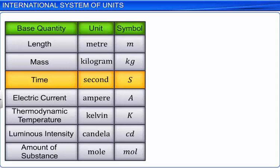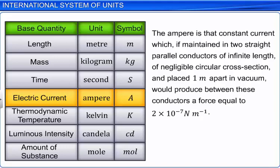Electric current is measured in ampere, denoted by the capital letter A. An ampere is that constant current which, if maintained in two straight parallel conductors of infinite length...